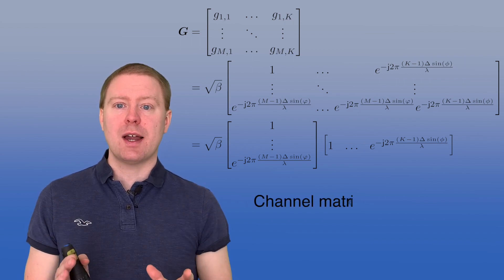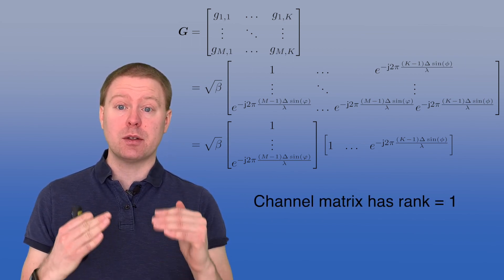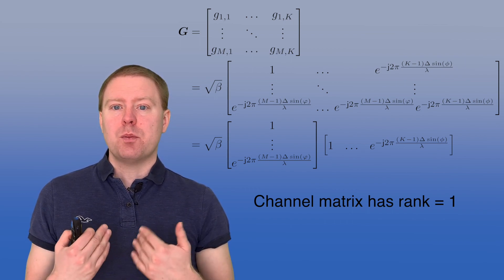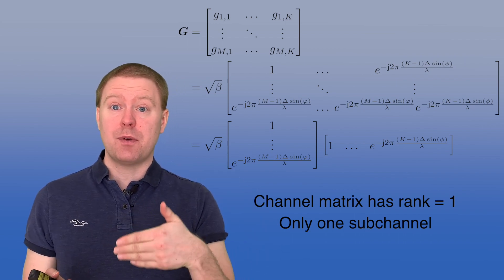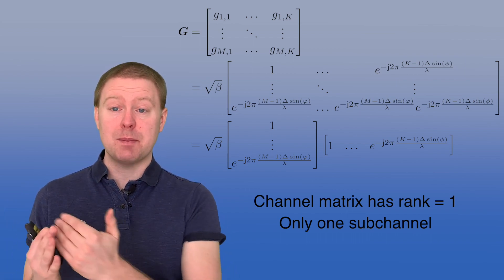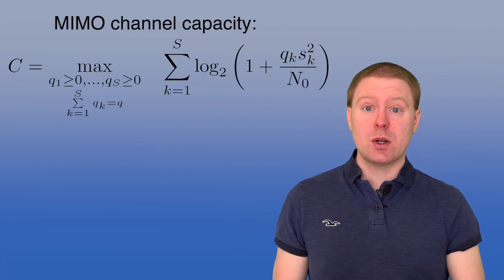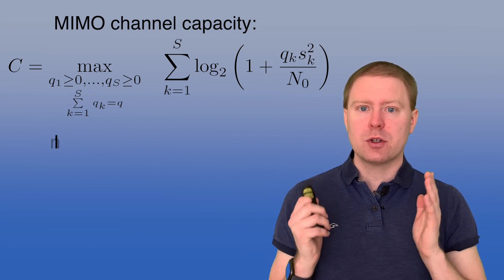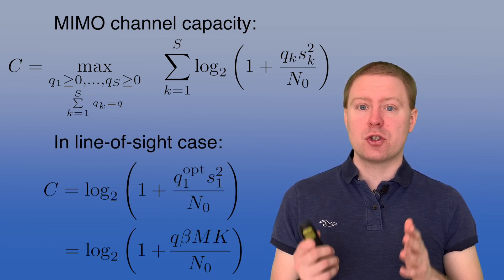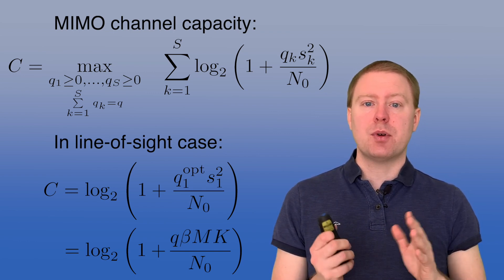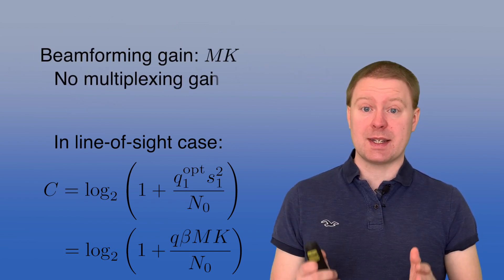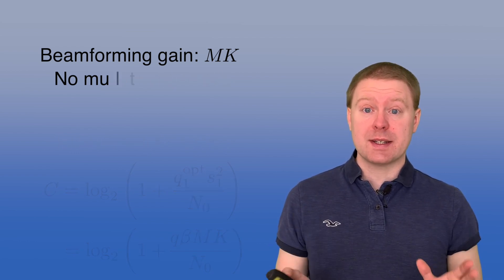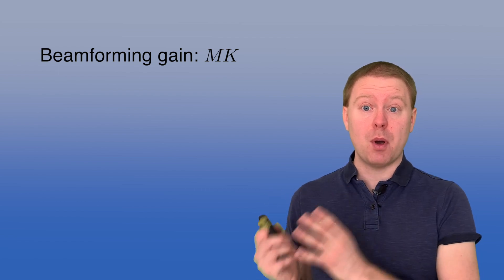Since the channel matrix G can be written as an outer product of two vectors, it has rank one, meaning there is only one parallel sub-channel. The capacity is achieved by maximum ratio transmission from the transmitter and maximum ratio combining at the receiver, putting all power Q into the single sub-channel. The singular value S1 squared equals beta times M times K, giving a beamforming gain equal to the product of the number of transmit and receive antennas, but with no multiplexing gain since there is nothing in front of the logarithm.